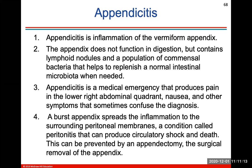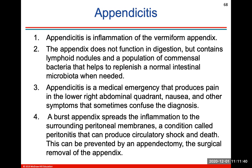Appendicitis is inflammation of your appendix. The appendix does not function in digestion, but it contains lymphoid nodules and a population of bacteria that helps to replenish normal intestinal microbiota. Appendicitis is a medical emergency that produces pain in the lower right abdominal quadrant, nausea, and other symptoms. A burst appendix could spread inflammation to the surrounding peritoneal membranes — a condition called peritonitis — which can produce circulatory shock and death. This can be prevented by an appendectomy, which is the surgical removal of the appendix.